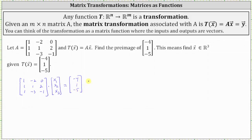Let's go ahead and solve this using an augmented matrix, where the first row was one, negative two, zero, negative four. The second row was one, one, two, one. And the third row was one, negative three, negative one, negative five.